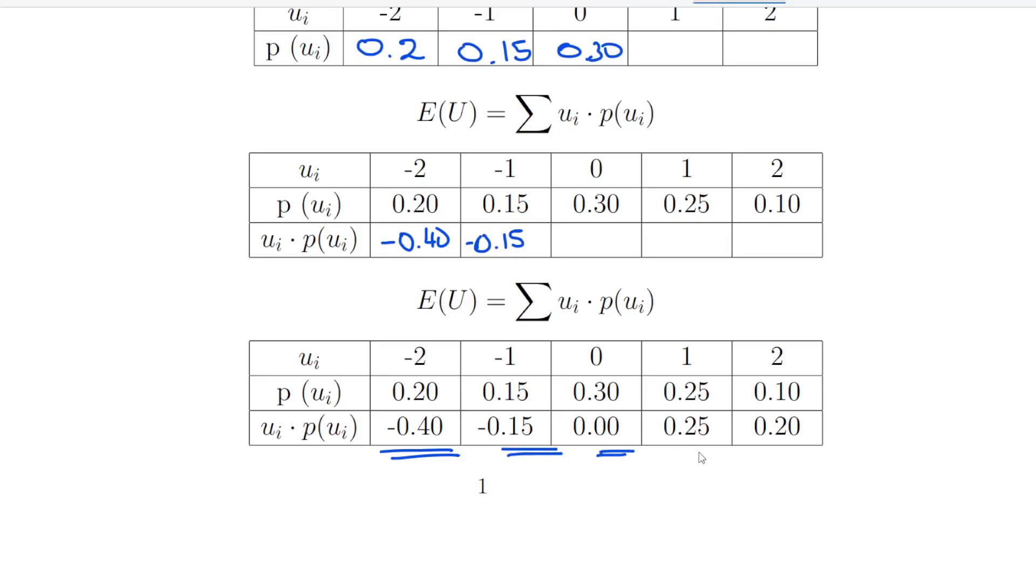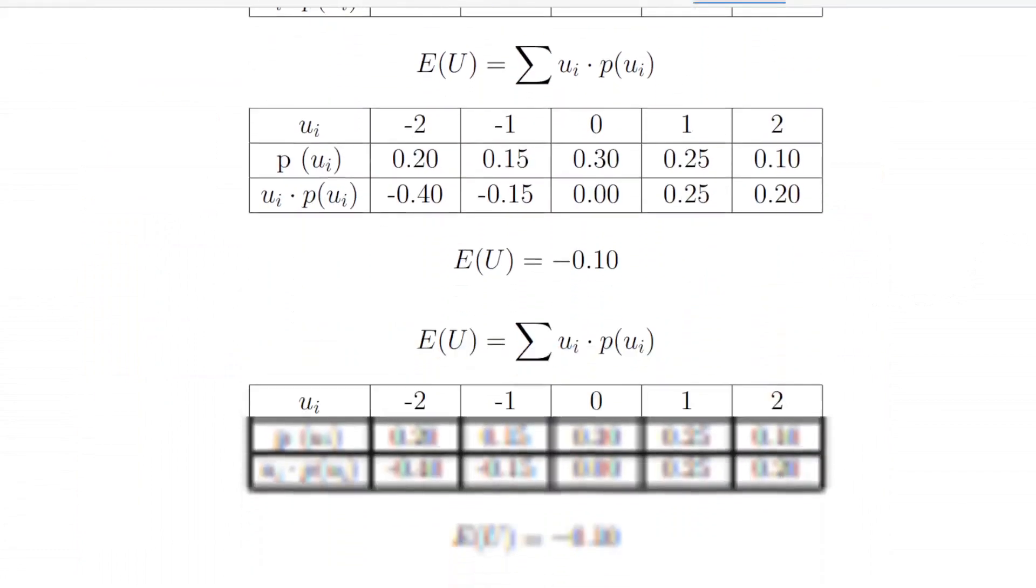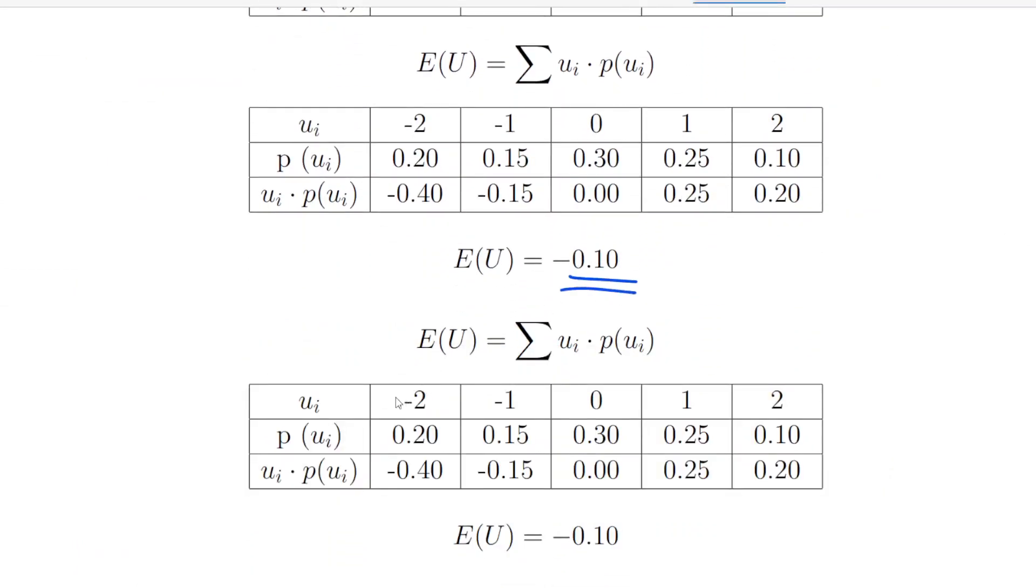These are the values times the probabilities that we're going to need. To calculate the expected value of U, we just sum them all up: minus 0.40 plus minus 0.15 plus 0.00 plus 0.25 plus 0.20. That gives us an expected value of minus 0.1. That is the expected value of U, the difference between X and Y, X minus Y to be specific.